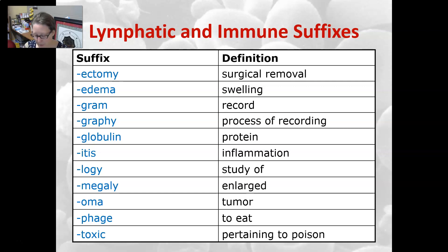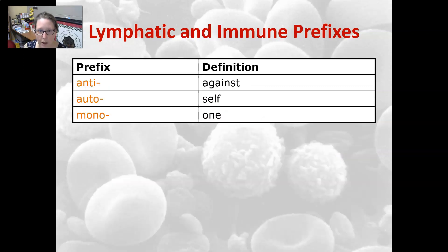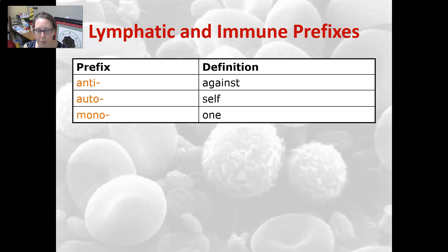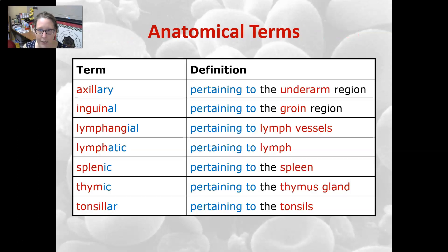Phage means to eat, and toxic is pertaining to poison. For your lymphatic and immune system prefixes: anti means against, like antibody; auto means itself, like an autoimmune disease; and mono means one, like a monocyte.